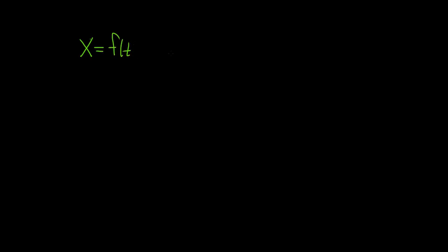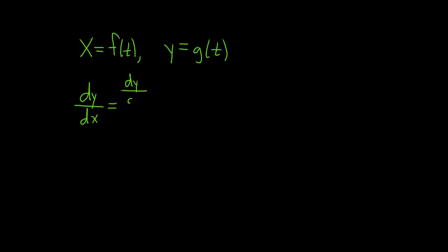In this video, we're going to come up with the formula for the derivative of a function given parametric equations. Say we have x equals f of t and y equals g of t. Assuming these are differentiable, the formula for the derivative of y with respect to x is equal to dy/dt over dx/dt.